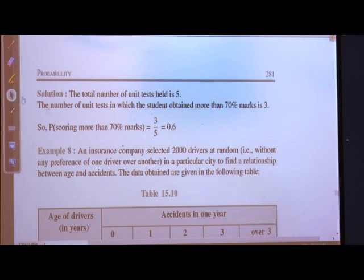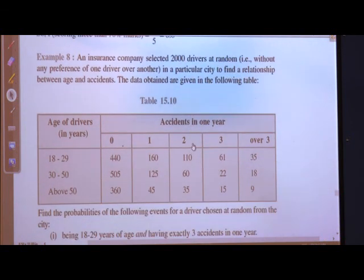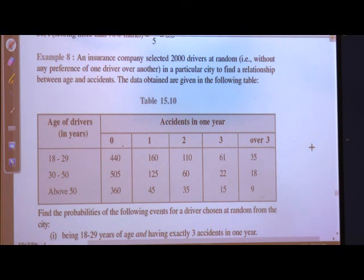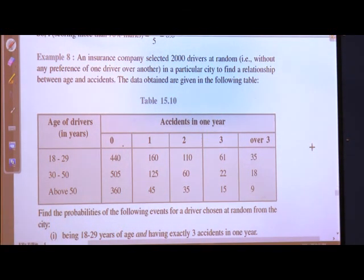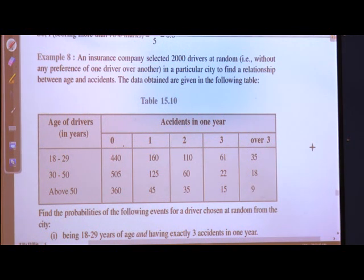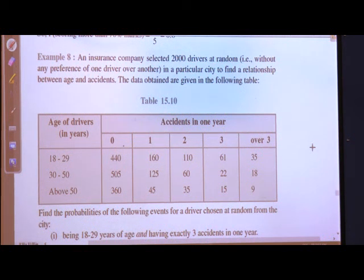What is example 8? An insurance company selected 2000 drivers at random — that is, without any preference of one driver over another — in a particular city, to find a relationship between age and accidents. The data are given in the following table showing age of drivers in years and number of accidents in one year.